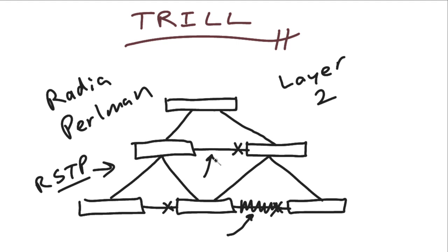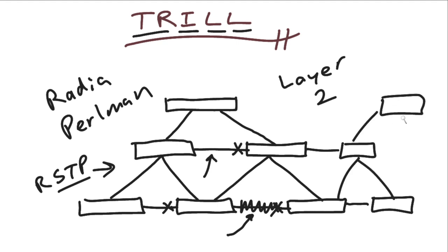So Radia Perlman went back to the drawing board and she created TRILL as a replacement technology—not an enhancement, but a replacement technology for all versions of Spanning Tree Protocol. What does TRILL stand for? Transparent Interconnection of Lots of Links. Lots of links, meaning it's a great idea for topologies like data center technologies would be a great example, where we're just going to be adding tremendous numbers of nodes and we're going to have all kinds of redundant connectivity.